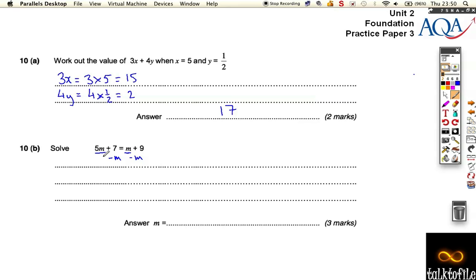So we need to take little brother to big brother, so we need to do the opposite, or the inverse. That gives us 4m plus 7 is equal to 9.